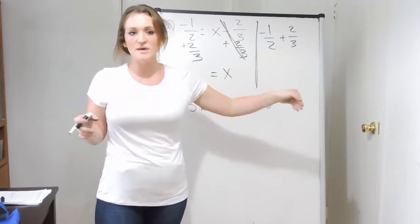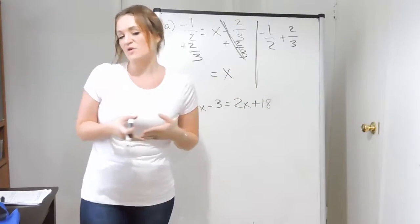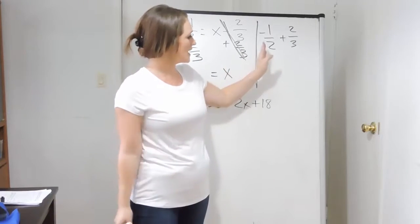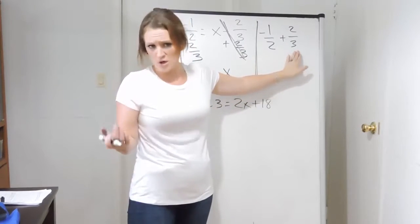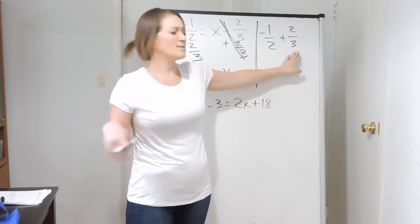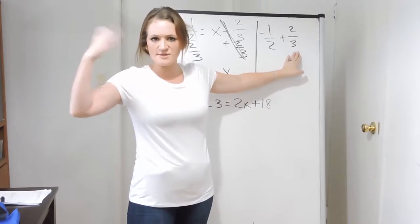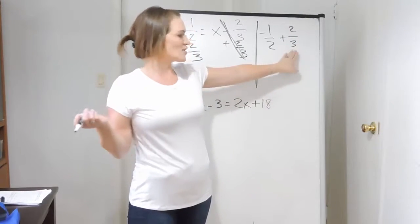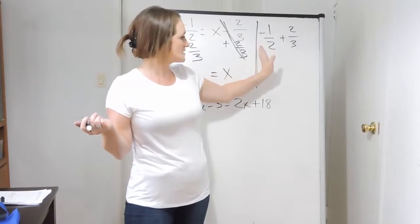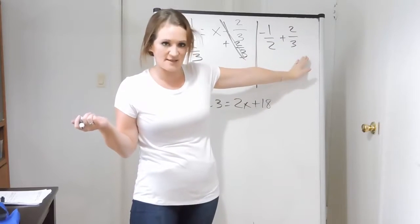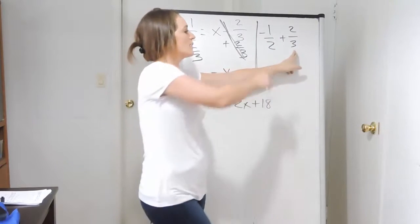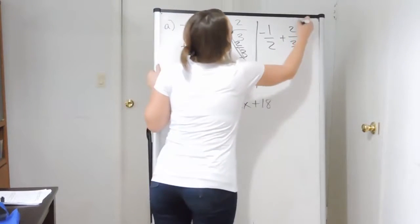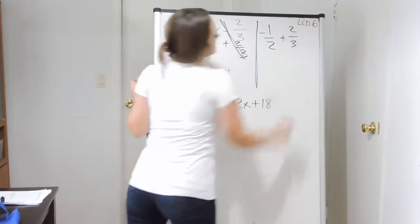Common denominators for two and three — we want the first multiple they both have in common. Does two go into three? No. The next multiple after three would be six. Going through your times tables: three, six, nine, twelve, fifteen, and so on. Always start with the bigger number, because the smaller number has to go into it. Three doesn't work, but the next one after that is six. Two does go into six, so our common denominator here is six.